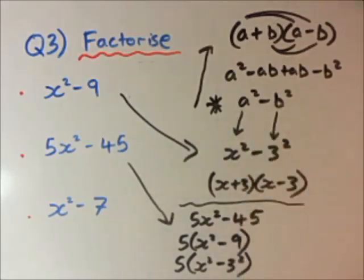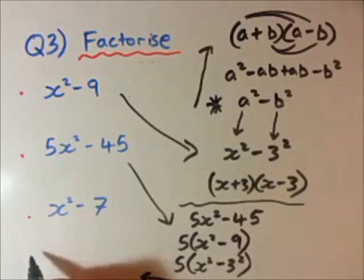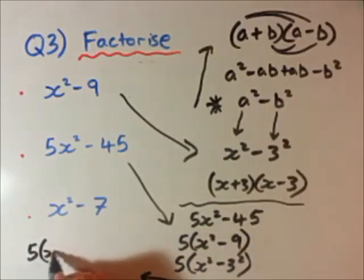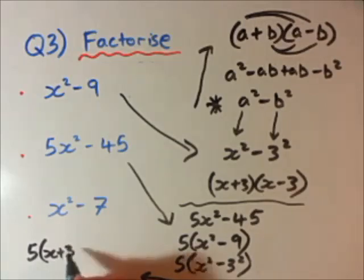And, again, very similar up here. We can then jump straight to the answer. Actually, for room, I'll come around this way. So, our final answer will be 5, x plus 3, x minus 3.